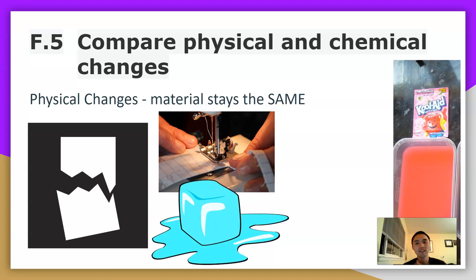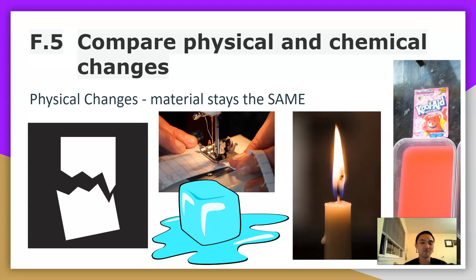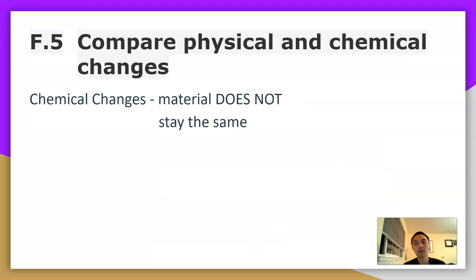Ice melting, so any example where there is a change in state of the matter, that is also still a physical change. And just to throw it out there again, another change of state example, melting wax. The wax part itself, melting, is also a physical change.